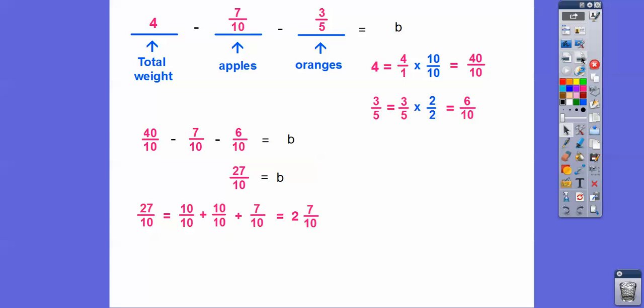And then 27 tenths is the same as 10 tenths plus 10 tenths plus 7 tenths. And then this 10 tenths equals 1. This 10 tenths also equals 1, so these two add up to 2. So it's 2 and there's left over 7 tenths right there. So the bananas weighed 2 and 7 tenths of a pound.